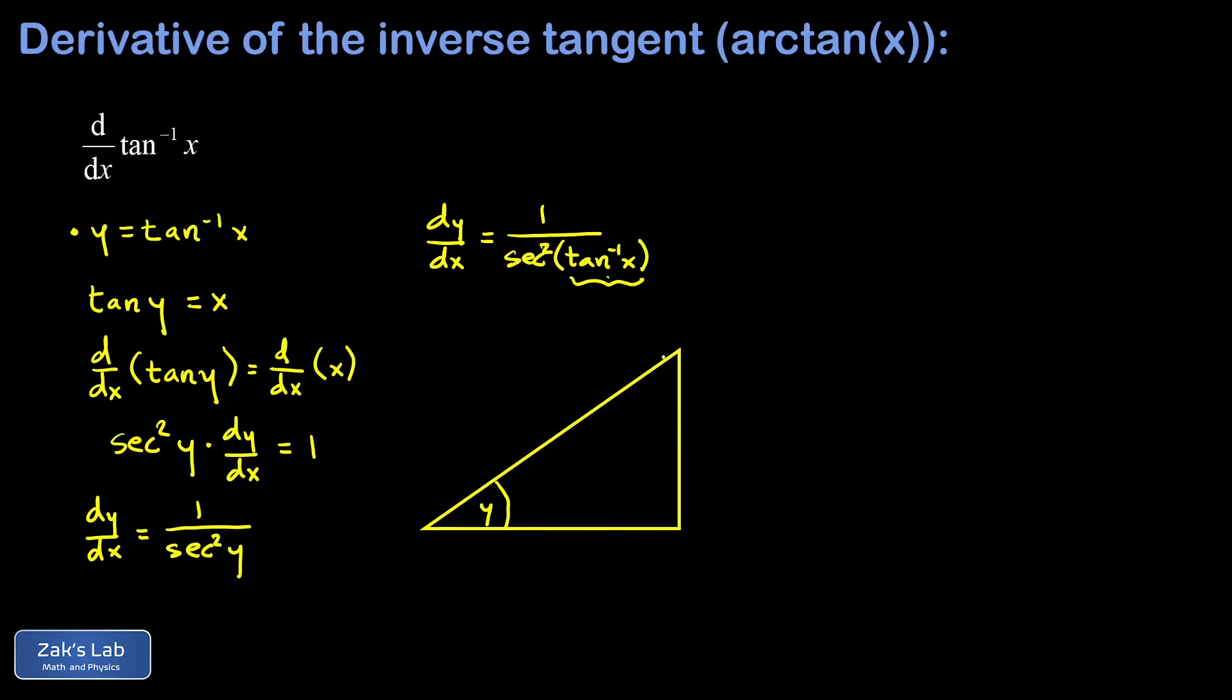Well that's the angle whose tangent is x. That means the opposite over the adjacent side has to be equal to x, and we can just choose those to be x for the opposite side and 1 for the adjacent side.